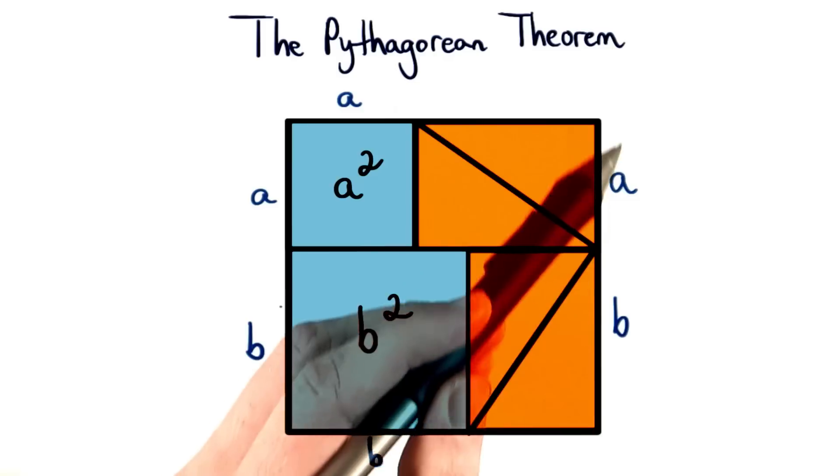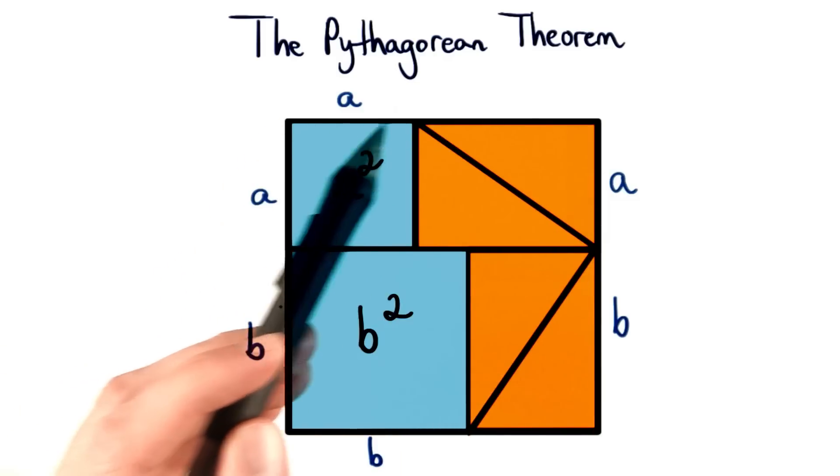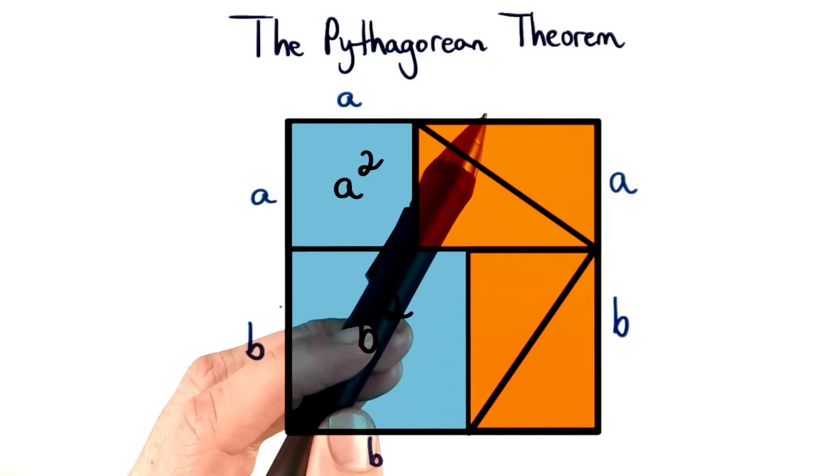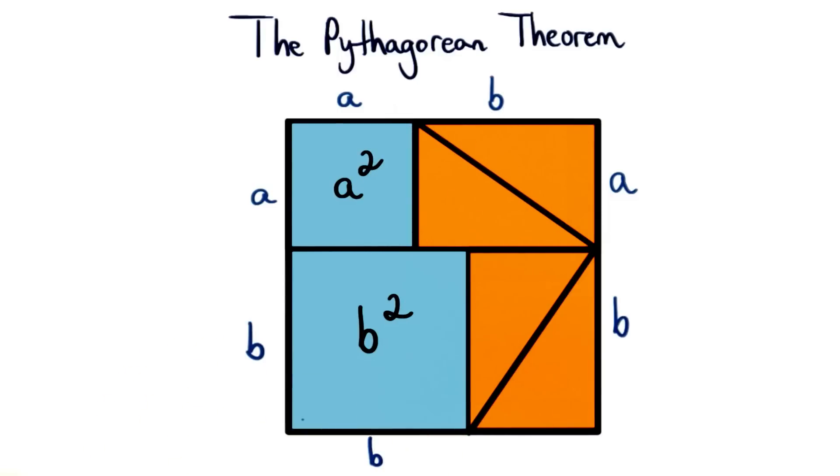If our entire shape is a square, then we know that if this side is a plus b, then this side must also be a plus b. That's how we know that this side length is b. We can use the same reasoning to say that this side length here is a, since we know the entire side must be a plus b.